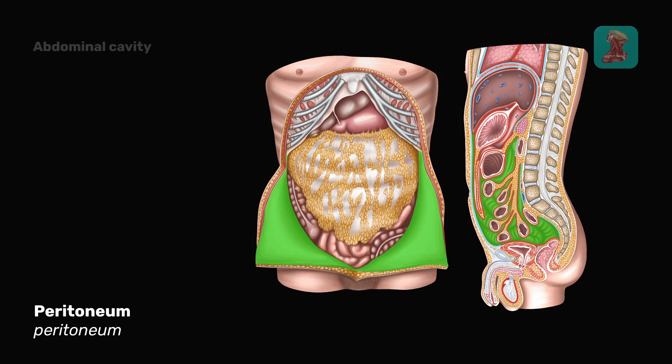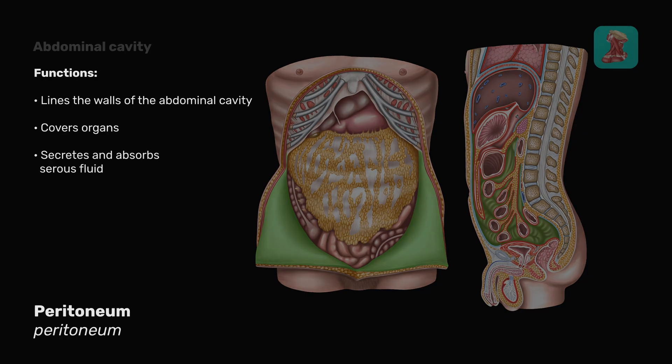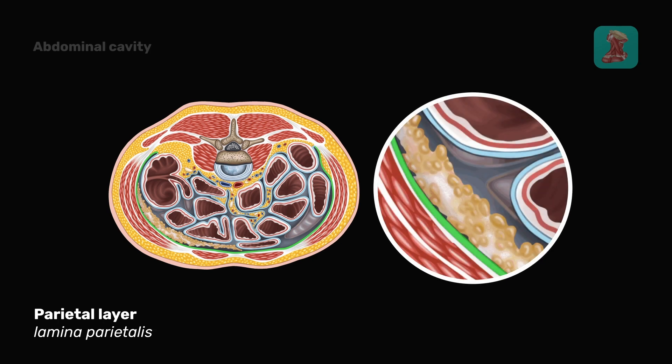The peritoneum is a serous coat lining the walls of the abdominal cavity and covering some organs located in it. It secretes and absorbs serous fluid. The peritoneum is divided into two sheaths: the parietal sheath, which covers the internal surface of the abdominal wall, and the visceral sheath, which covers the organs of the abdominal cavity.